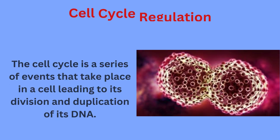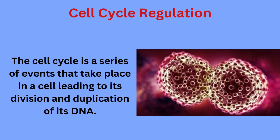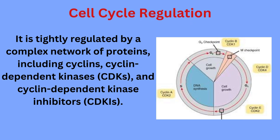Cell Cycle Regulation. The cell cycle is a series of events that take place in a cell, leading to its division and duplication of its DNA. It is tightly regulated by a complex network of proteins, including cyclins, cyclin-dependent kinases (CDKs), and cyclin-dependent kinase inhibitors (CKIs).